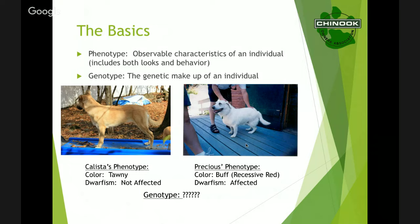On the right is another dog, North Down Precious, a purebred Chinook. The things you can observe about Precious in this picture: she is buff and she is an affected dwarf — you can tell by her relatively normal body size and quite stunted legs. Genotype is the genetic makeup of an individual and you cannot necessarily tell by looking at them. That's why we do things like the Optimal Selection test — we've learned things from Optimal Selection profiles that we didn't know before Chinooks started submitting for them.